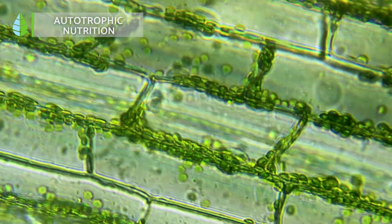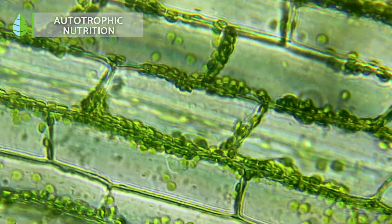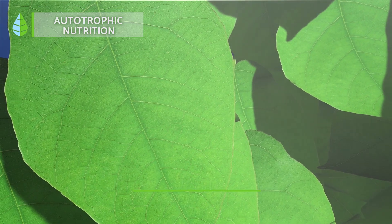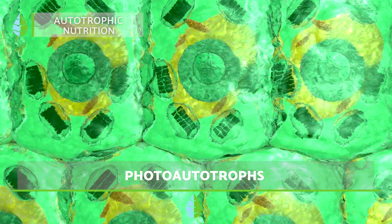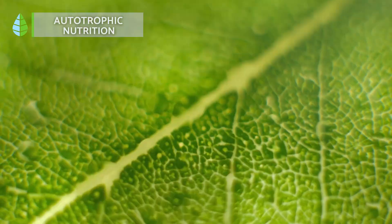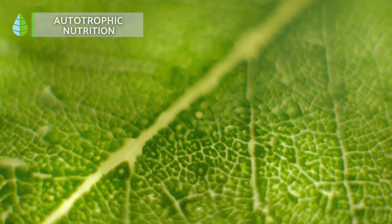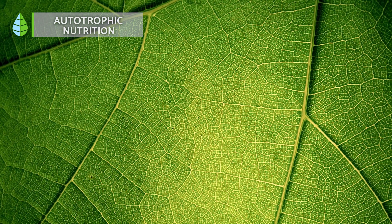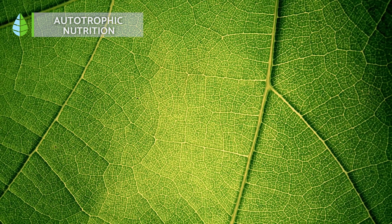Each autotrophic organism falls under a different subgroup of this diet, depending on the route and elements it takes. Photo-autotrophs are organisms that utilize photosynthesis as a means of obtaining energy and have specialized organelles called chloroplasts, which capture sunlight essential for this process. This category includes plants, algae, and cyanobacteria.